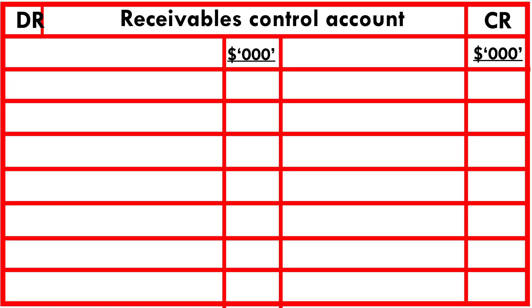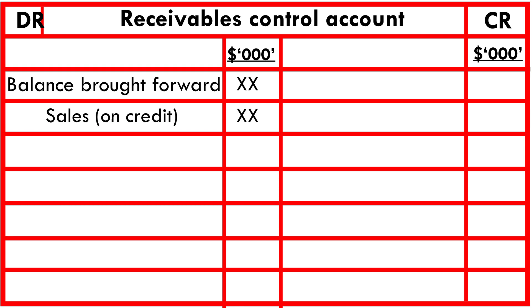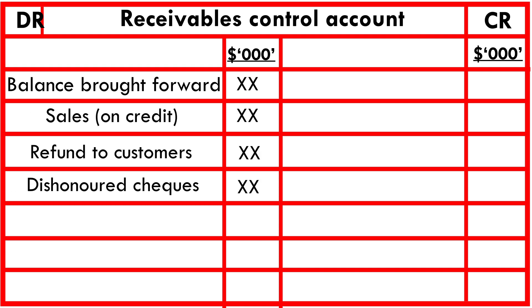Receivables is an asset, so the balance brought down is on the debit side. Anything that increases this balance will appear on the debit side as well, and these include sales made on credit, refunds to customers, dishonored checks, and penalties for late payments — all entered on the debit side.